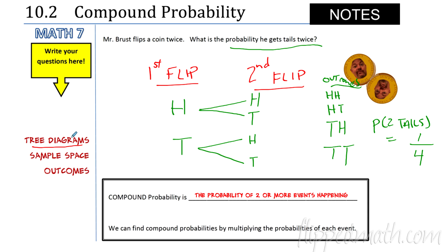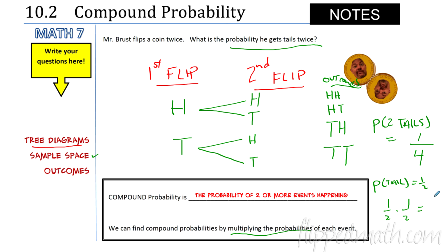All of these outcomes together make up the sample space, and each one is called an outcome. We have four different possibilities, and only one of them is two tails, so the probability of two tails is 1 out of 4. Using the multiplication rule: the probability of a tail is 1/2, and 1/2 times 1/2 equals 1/4 — the same answer we got from the tree diagram.